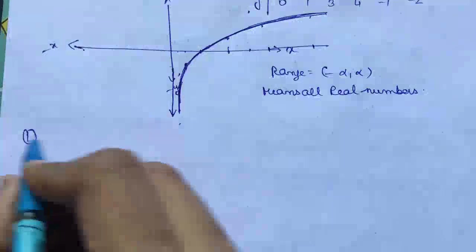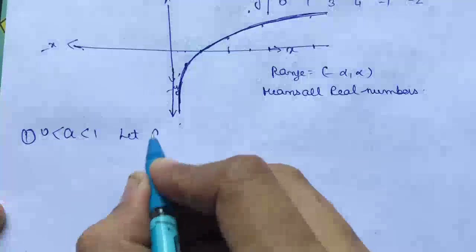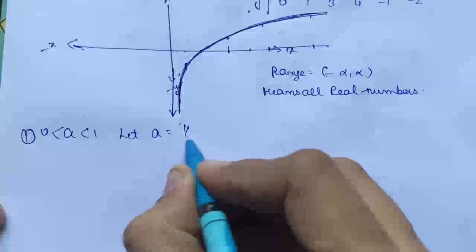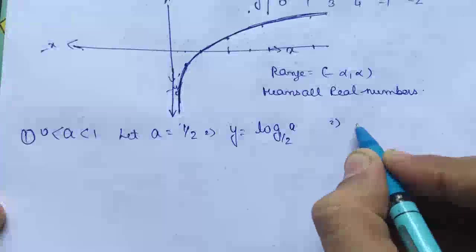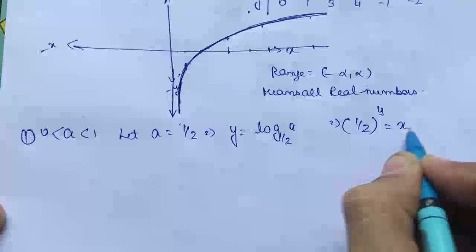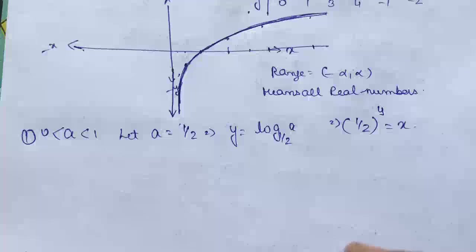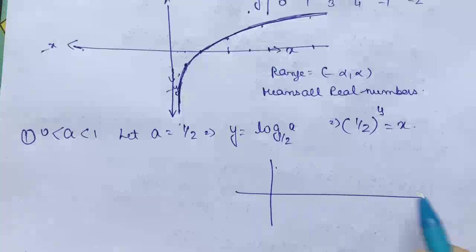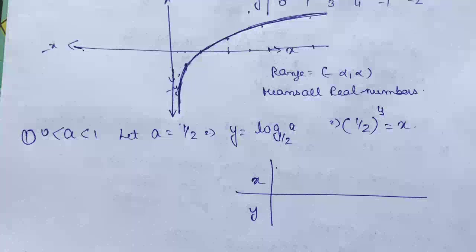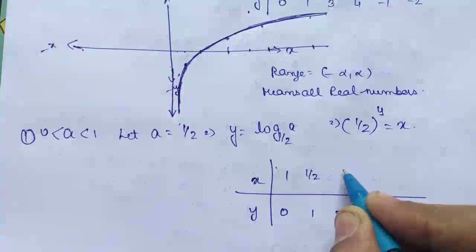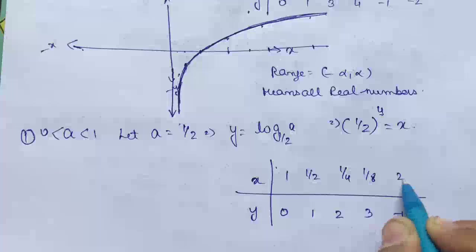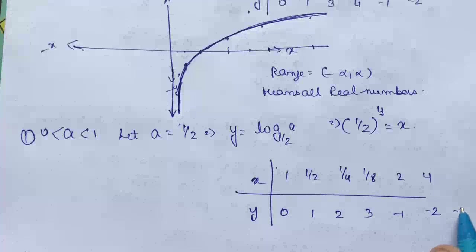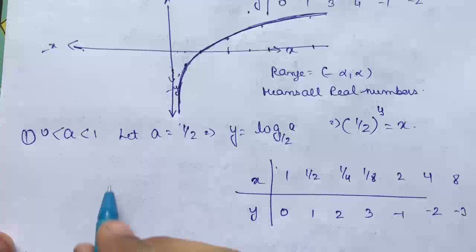So the range of the logarithmic function is all real numbers. Now we go to the second part: if 0 < a < 1, let a = 1/2. This implies y = log of x base 1/2, which implies (1/2) raised to the power y equals x.